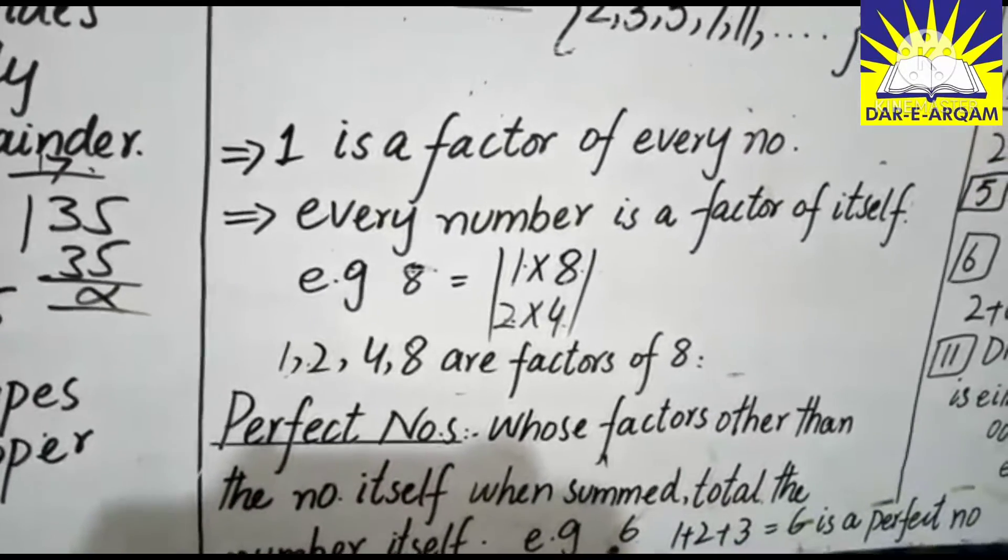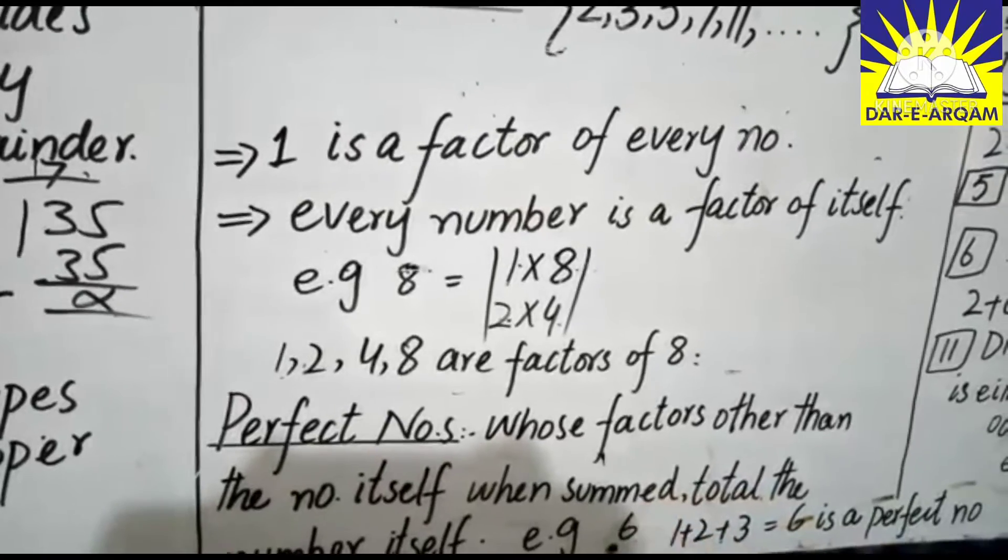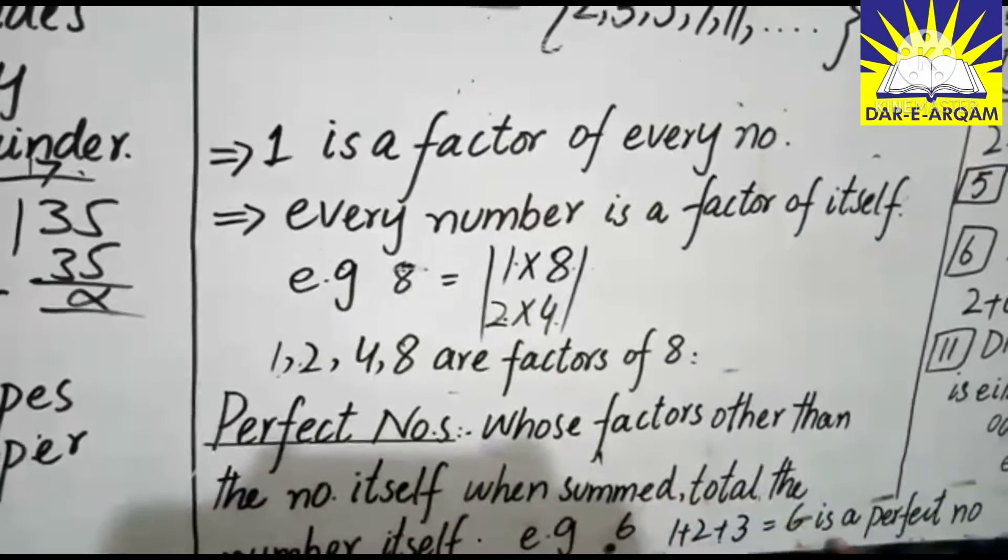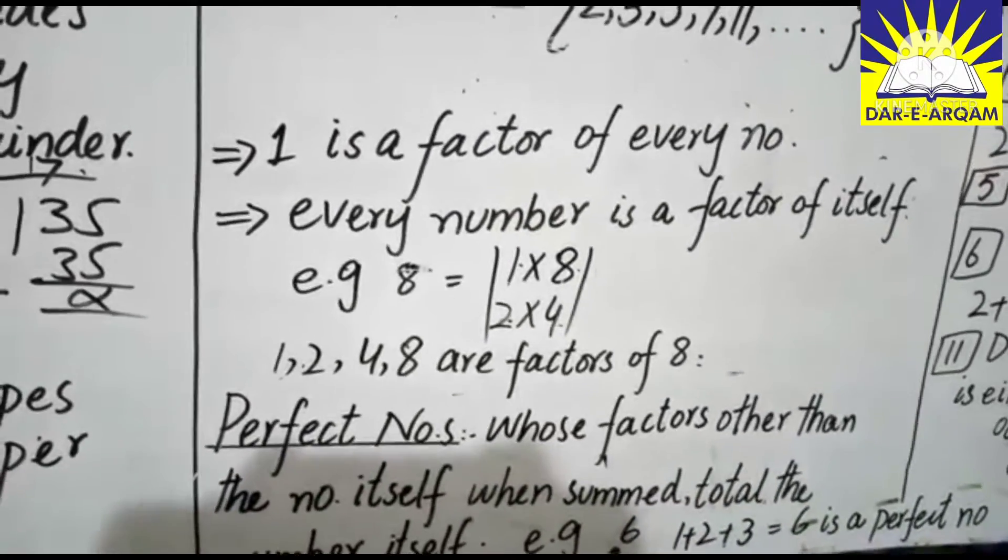If we sum up those factors, 1 plus 2 plus 3 equals 6. So 6 is a perfect number.